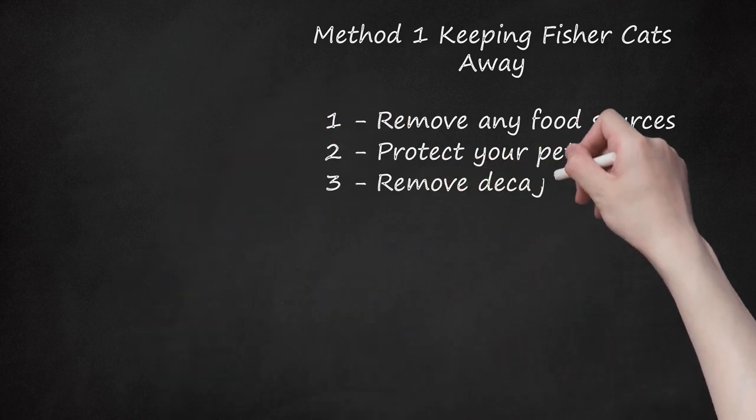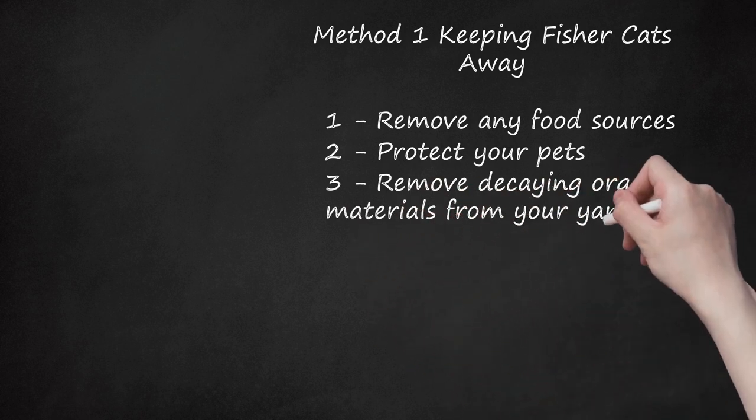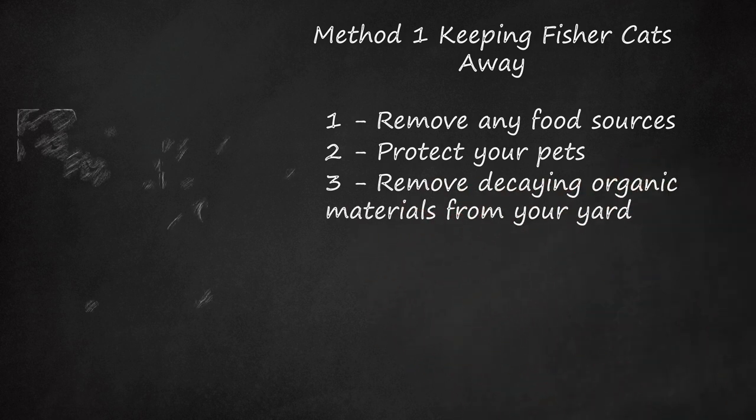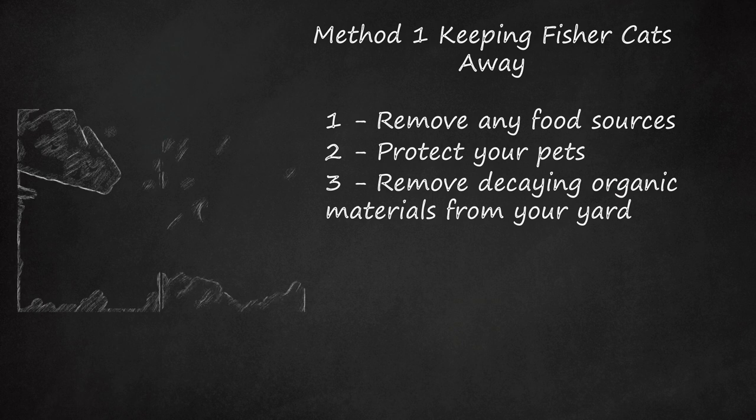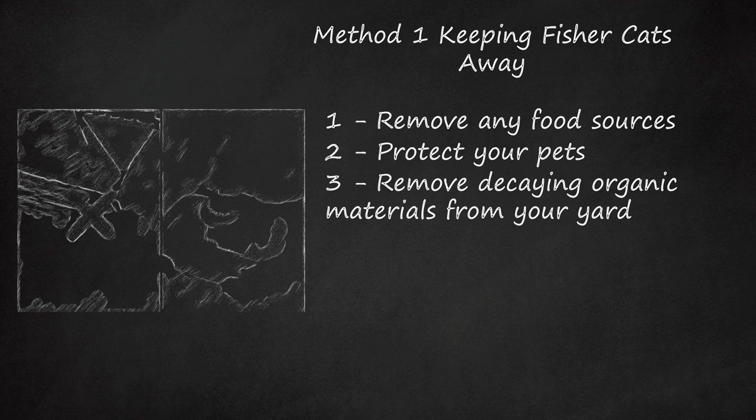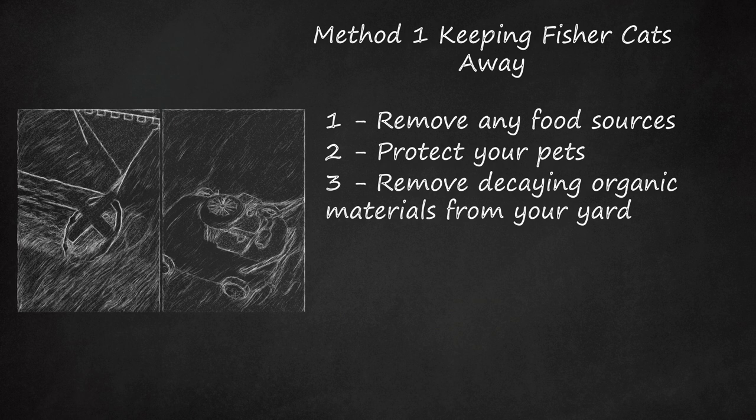Step 3: Remove decaying organic materials from your yard. Fisher cats like to find places to nest. Thus, they might be drawn to your lawn if it has a lot of decaying organic material around it. Get rid of the organic materials, and they will make a den somewhere else. That means things like logs, stumps, and brush. Getting rid of such items and clearing the lawn will keep the fisher cat more at bay. Trim brushes and trees. Mow the lawn regularly so that they have fewer hiding places.